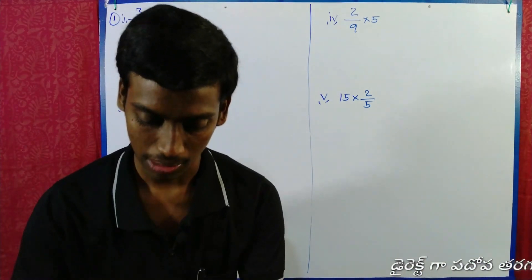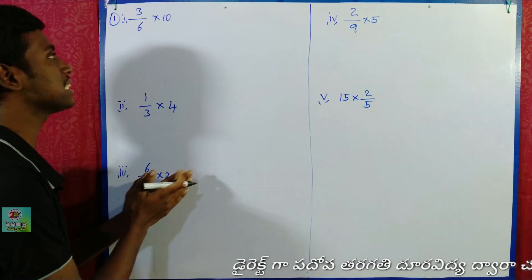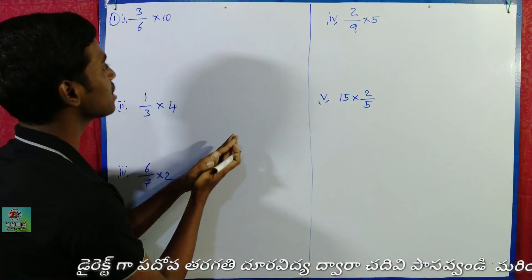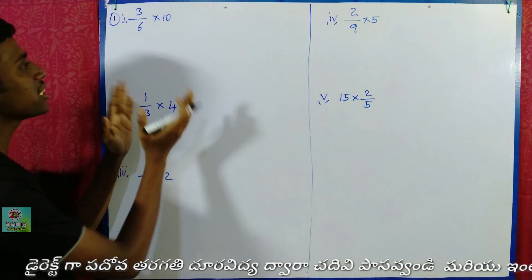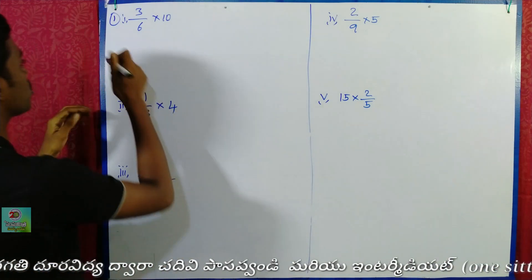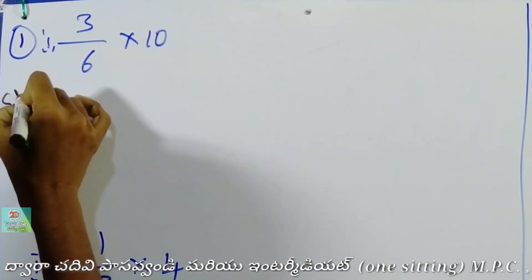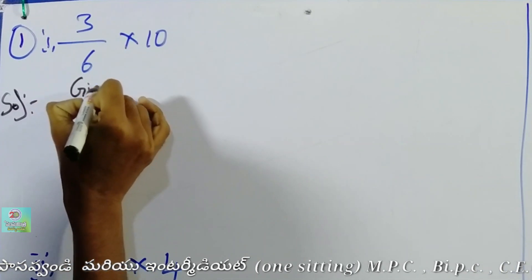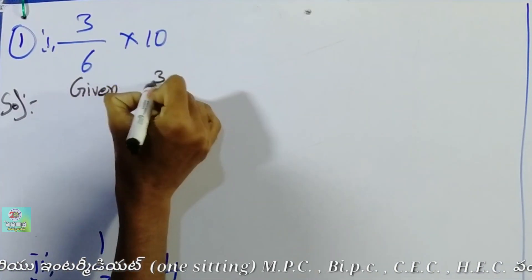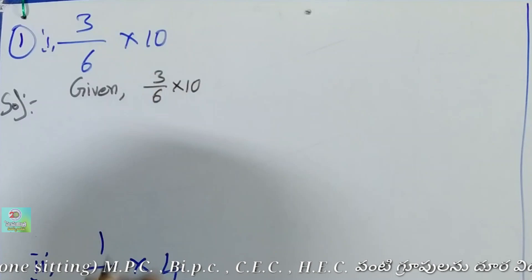Here we have some 5s and 3s. If we want to do this, we will multiply it. And then we will see the answer as a mixed fraction. First, given: 3 by 6 into 10. This is what we have done.